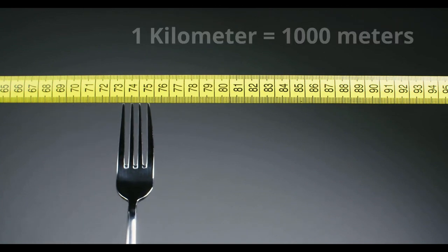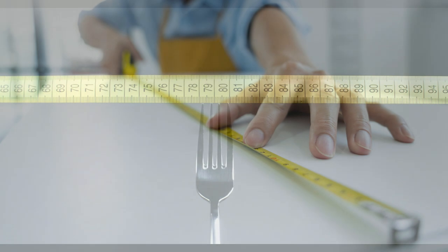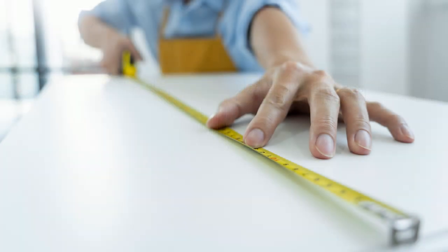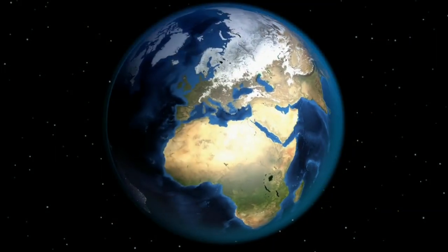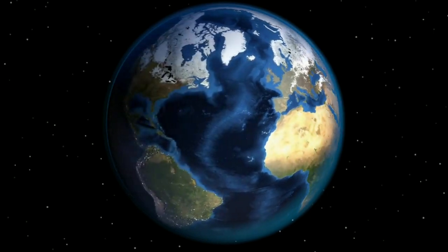Interesting fact, a meter originally was the distance of one-tenth millionth of the distance from the equator to the North Pole. Now it is the length that light travels in a vacuum in roughly one three-hundred millionth of a second. Not really sure exactly how they calculate that, but that's the distance.